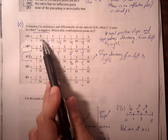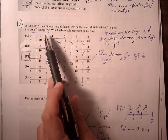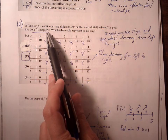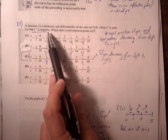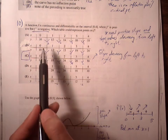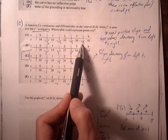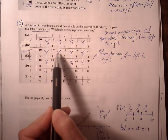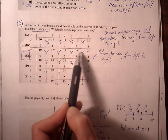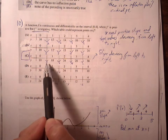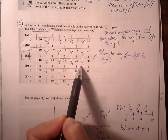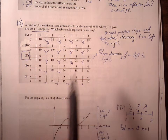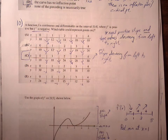We also need f double prime to be negative, meaning even though all slopes are positive, we want the slope pattern to be decreasing. Option A has slope 2 repeated — not decreasing. Option B has slopes 2, 3, 4, 5 — becoming steeper, so not concave down. But option C has slopes 8, 6, 4, 2 — all positive but decreasing from left to right. That indicates concave down. So the answer is choice C.